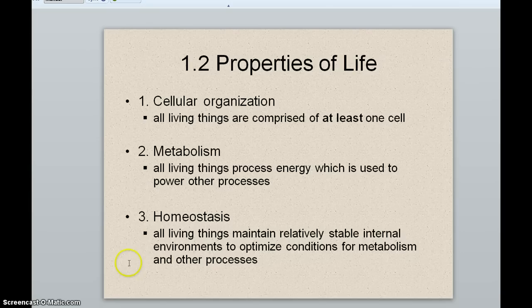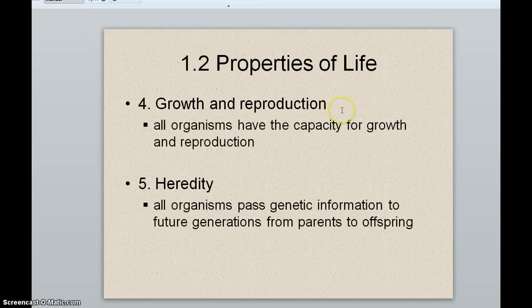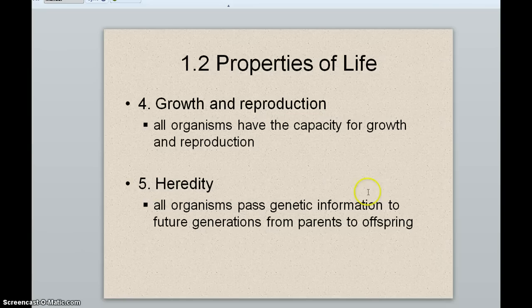The fourth property of life is growth and reproduction. All organisms grow — they start out small, the cells grow, individual tissues grow, the organism grows. They get bigger and then they reproduce before they die, or they become extinct. So growth and reproduction is a property of life. And heredity is also a property of life — organisms pass their genetic information to future generations, so parents pass their DNA to offspring.